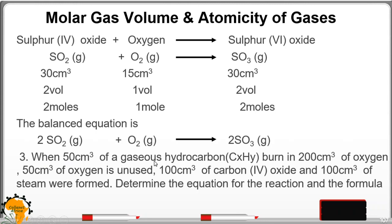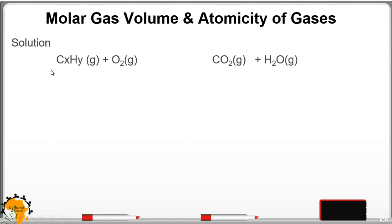When 50 centimeters cubed of gaseous hydrocarbon CXHY burns in 200 centimeters cubed of oxygen, 50 centimeters cubed of oxygen is unused. When you're reading this question, it is good to read sentence after sentence. 50 of oxygen is unused, meaning 150 was used up in the reaction.